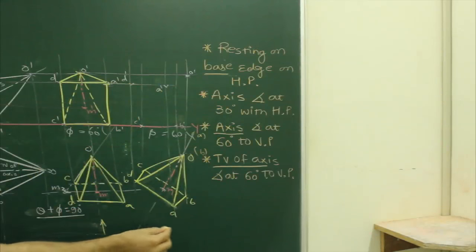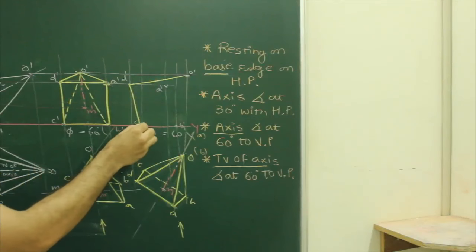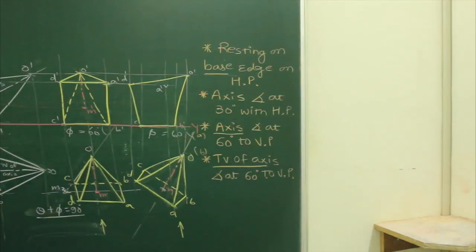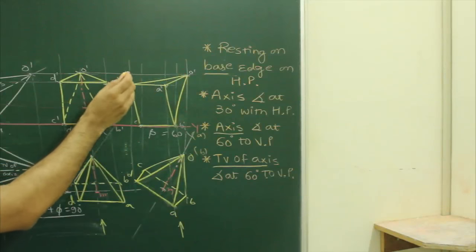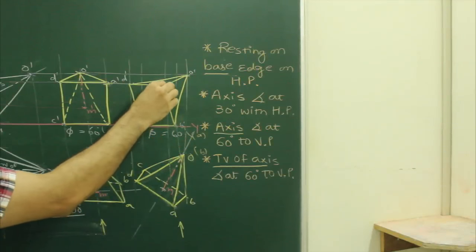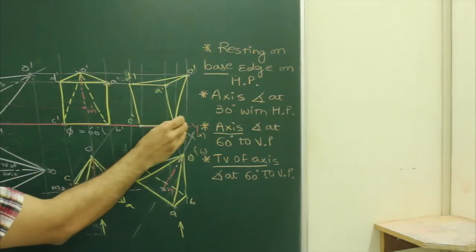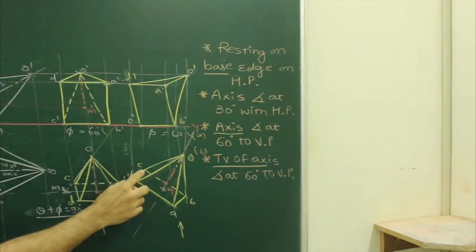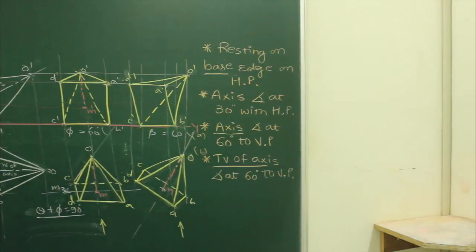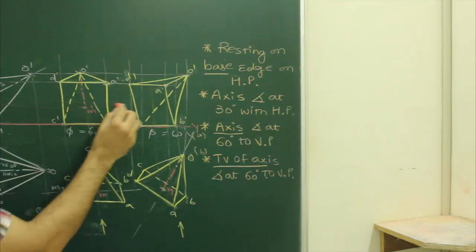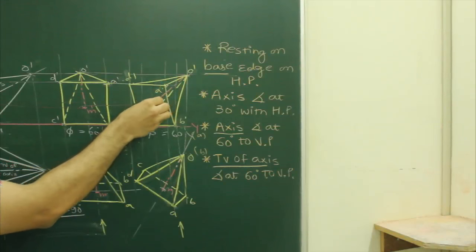Again applying the same visibility logic — observer viewing from the front, so the extreme boundary lines are dark. A dash is nearest to observer, so O dash–A dash, D dash–A dash, and D dash are dark. C is away from the observer, so O dash–C dash would be dotted.